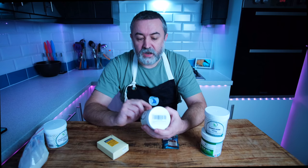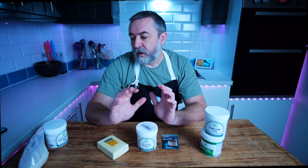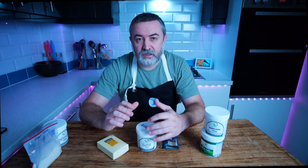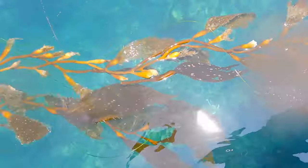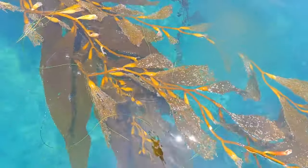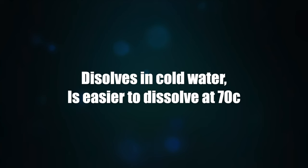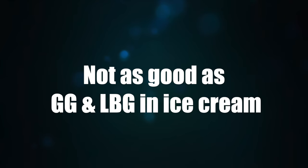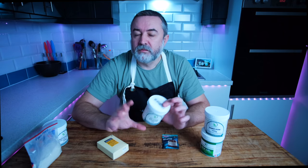The next ingredient is sodium alginate. I don't have any of that — it comes from seaweed. It has a similar kind of effect as agar-agar. It increases viscosity. It comes from brown ocean kelp, a cold water kelp. It dissolves in cold water but hydrates better around 70 degrees centigrade. It's okay at keeping ice crystals small, and it does contribute to a better texture and body that some gums can't create. But if you want to avoid sodium alginate and agar-agar, that's absolutely fine.